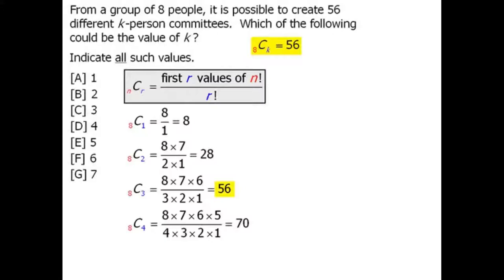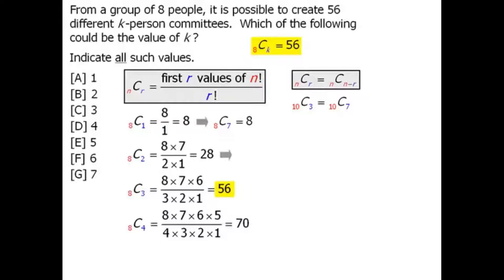To evaluate the remaining options, we apply the rule that N choose R equals N choose N minus R. For example, 10 choose 3 equals 10 choose 7. Since 8 choose 1 equals 8, we know 8 choose 7 also equals 8. Since 8 choose 2 equals 28, 8 choose 6 equals 28. Since 8 choose 3 equals 56, 8 choose 5 also equals 56. So when K equals 3 or 5, 8 choose K equals 56, giving us answers 3 and 5.